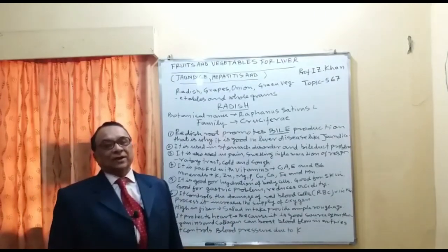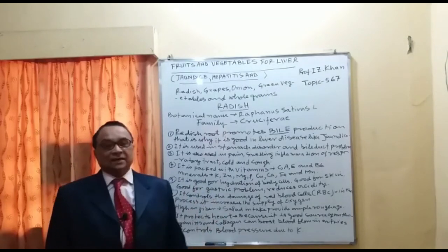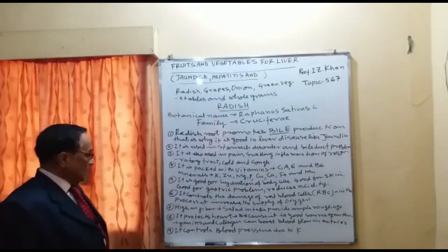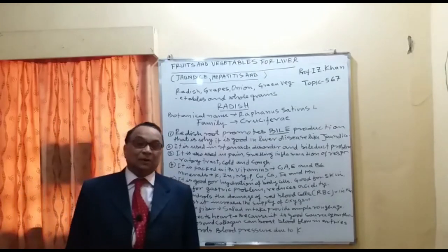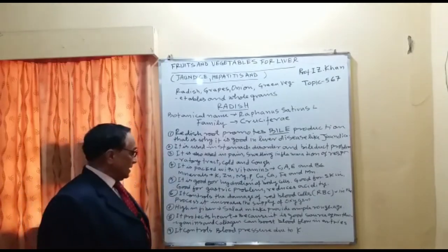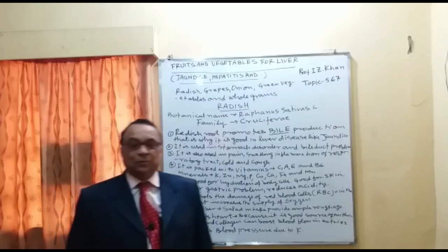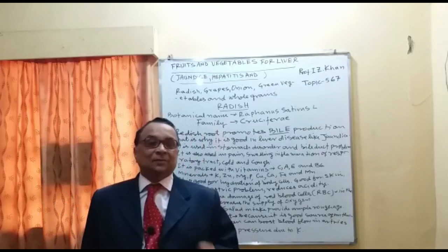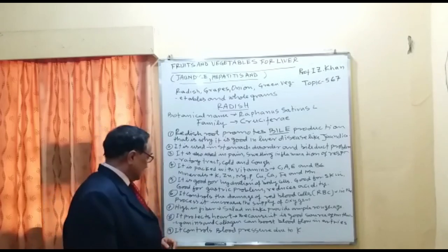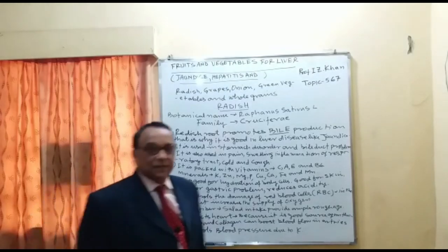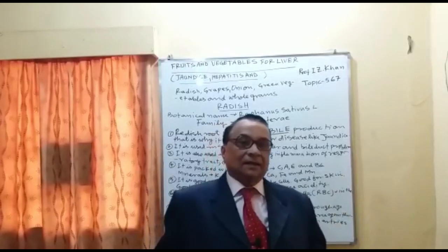Benefit number seven: radish is high in fiber, so salad intake provides ample roughage and prevents constipation. Benefit number eight: it protects the heart because it is a good source of anthocyanin, a very powerful antioxidant and anti-inflammatory compound. It also contains collagen, which boosts and maintains the arteries so there is no chance of blood clotting, helping your cardiovascular system. Benefit number nine: it controls blood pressure due to the presence of potassium.